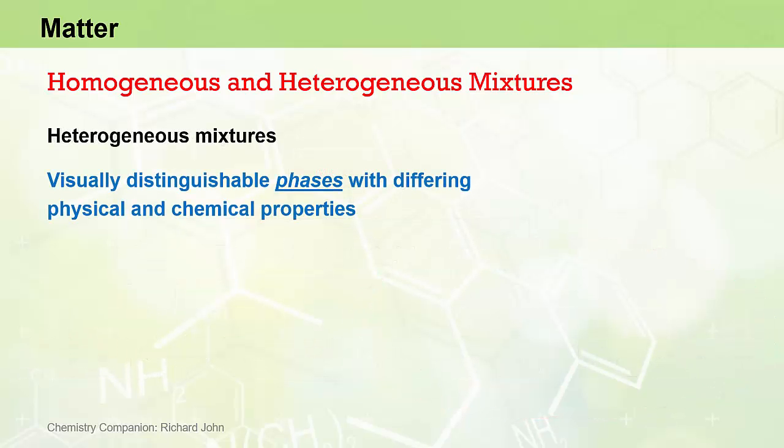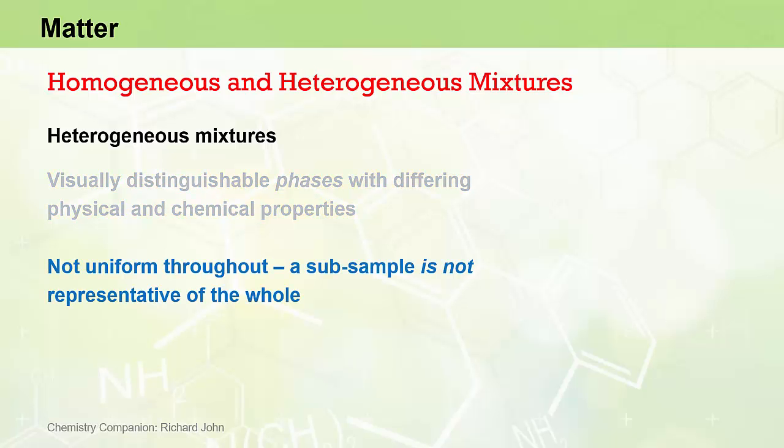Heterogeneous mixtures consist of two or more substances that have visibly distinguishable regions called phases, which have different physical and chemical properties. A heterogeneous mixture is not uniform throughout, and if we were to obtain a small subsample, it would not be representative of the whole piece of matter in question.